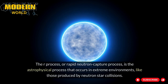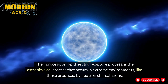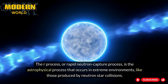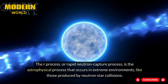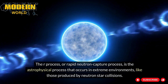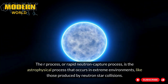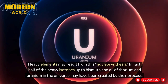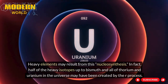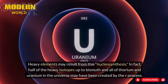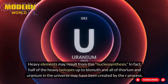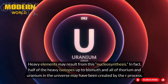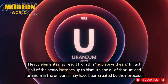The R-process, or rapid neutron capture process, is the astrophysical process that occurs in extreme environments like those produced by neutron star collisions. Heavy elements may result from this nucleosynthesis. In fact, half of the heavy isotopes up to bismuth and all of thorium and uranium in the universe may have been created by the R-process.